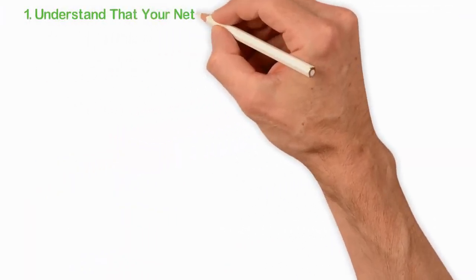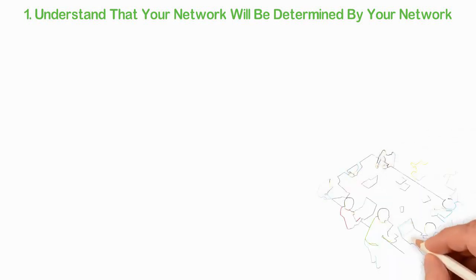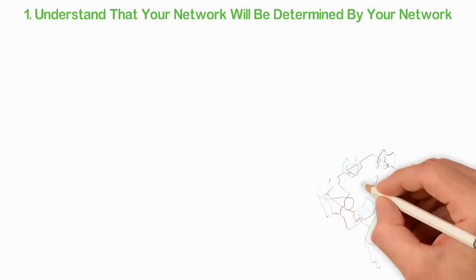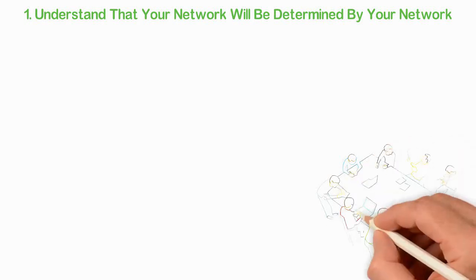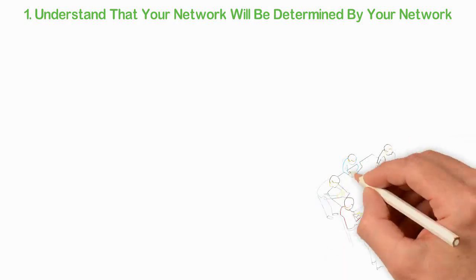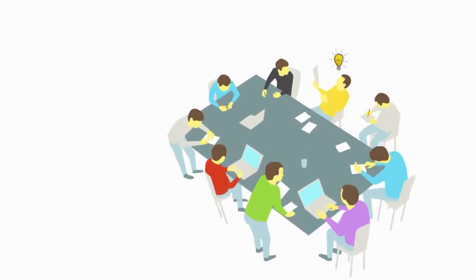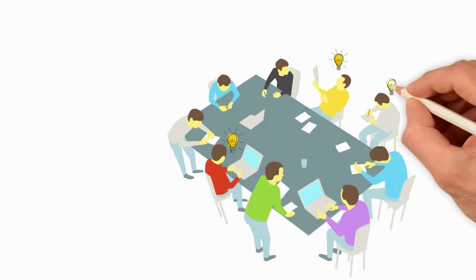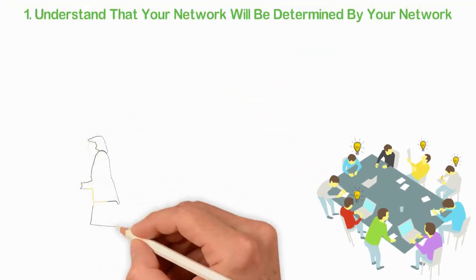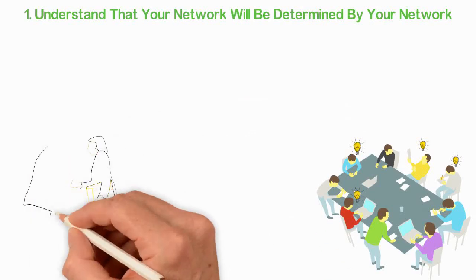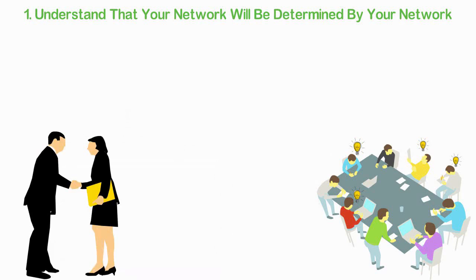Number 1: Understand that your net worth will be determined by your network. To start with, most people simply don't understand that they can never grow beyond who they know. To succeed in life, you must understand that people are gold. People are probably the most important asset you can ever have because real people have real gifts that can change your life. Some of them will give you information, some will give you money and some will give you just a book. Any of these can transform your life speedily so the very first thing you must do if you want to use people is to understand that people are gold. They are to be cherished.